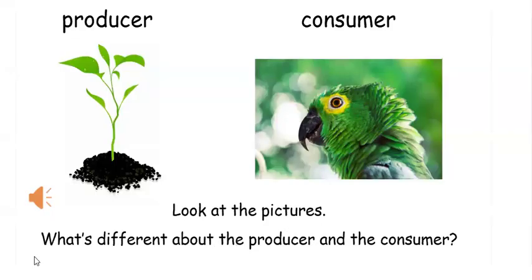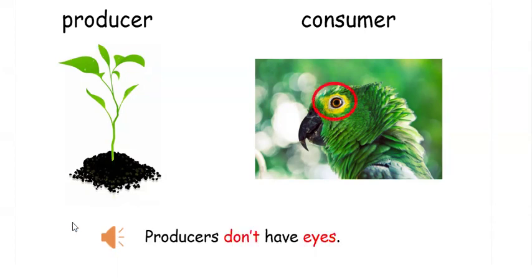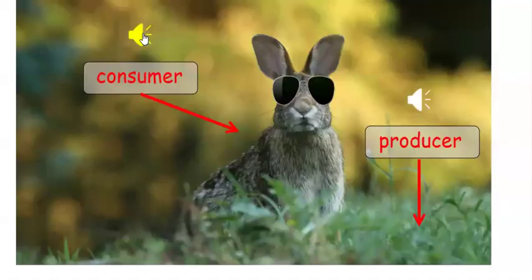Look at the pictures. What is different about the producer and the consumers? What does the consumer have that the producer does not have? Producers don't have eyes. Consumer. Consumer. Producer.